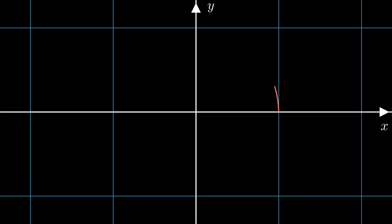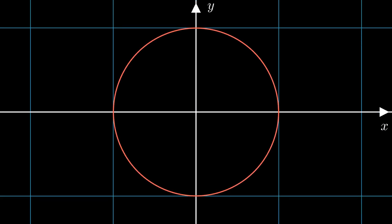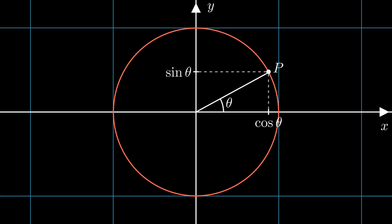Let's begin by establishing some basic terminology. If we draw the unit circle in the plane, and draw a line segment from the origin to a point P on the circle that makes out an angle theta together with the positive x-axis, then the x-coordinate of P is called the cosine of theta, and the y-coordinate of P is called the sine of theta.